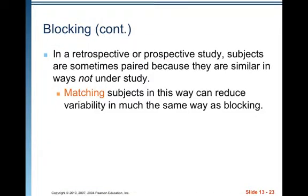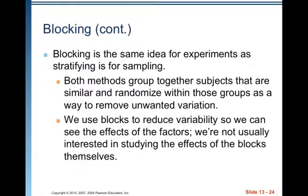In a retrospective or prospective study, subjects are sometimes paired because they are similar in ways not under study. Matching subjects in this way can reduce variability in much the same way as blocking. Matching can also be done in an experiment — they're basically just blocks of two. Blocking is the same idea for experiments as stratifying is for sampling: both methods group together similar subjects and randomize within those groups to remove unwanted variation. We use blocks to reduce variability so we can see the effects of the factors, and we're not usually interested in studying the effects of the blocks themselves.